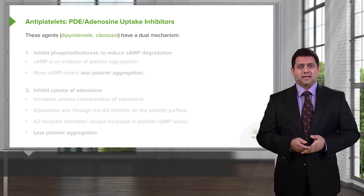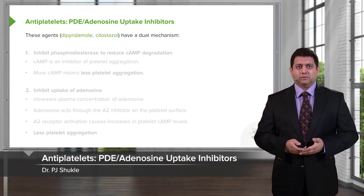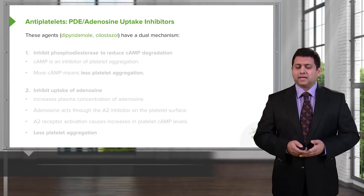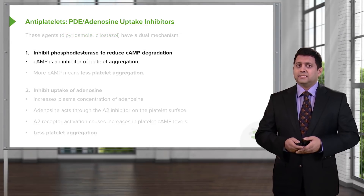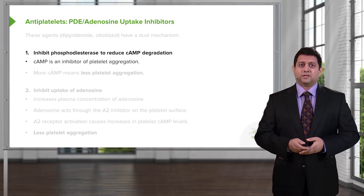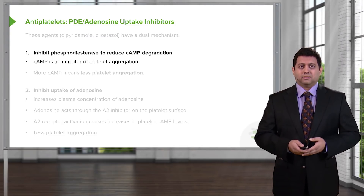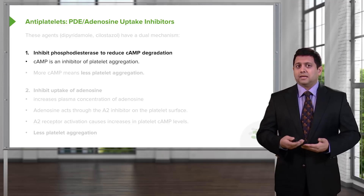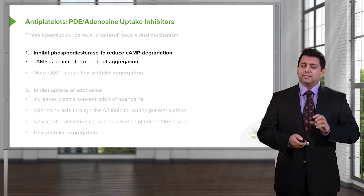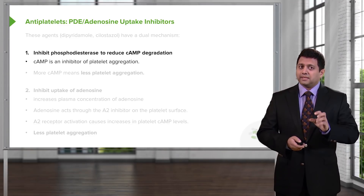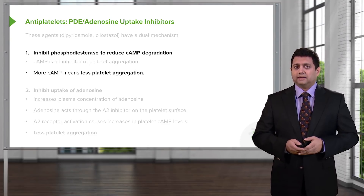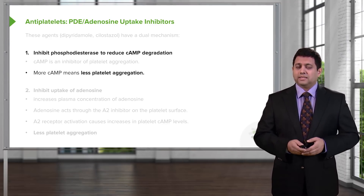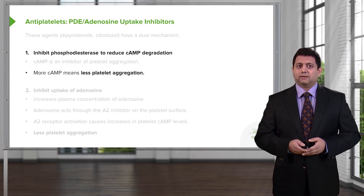The next class of drugs: dipyridamole is a very commonly used agent with a dual mechanism of action. The first action is that it inhibits phosphodiesterase, which reduces cyclic AMP-mediated degradation. Cyclic AMP is an inhibitor of platelet aggregation — so there's a double negative here. More cyclic AMP means less platelet aggregation, meaning these drugs inhibit platelet aggregation.